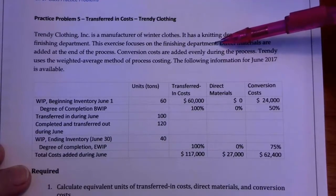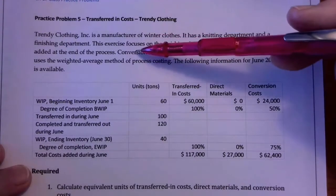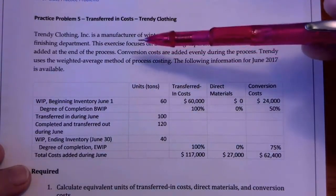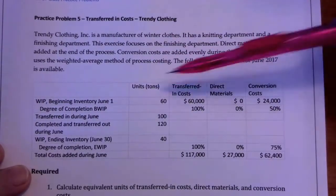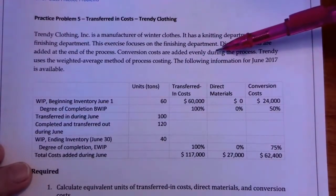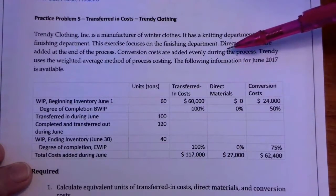So the exercise focuses on the finishing department. If it's a finishing department, they're probably not adding a lot of material, right? Direct materials are added at the end of the process - maybe they're buttons or plastic bags or something like that. Conversion costs are added evenly during the process. Trendy uses the weighted-average method of process costing and the following information for June.